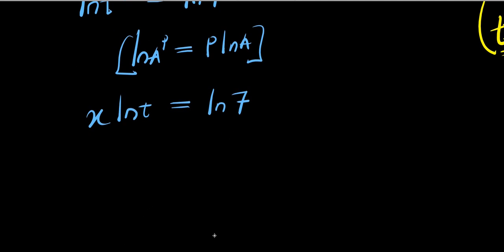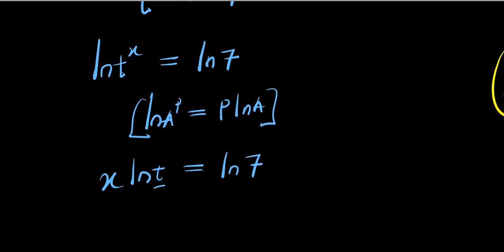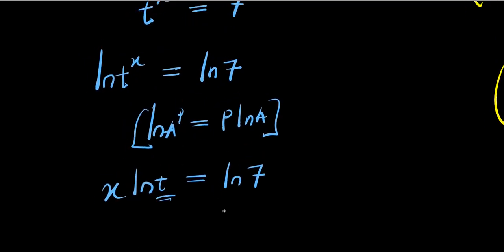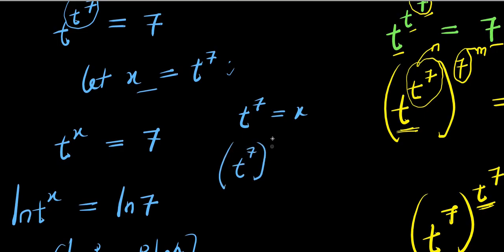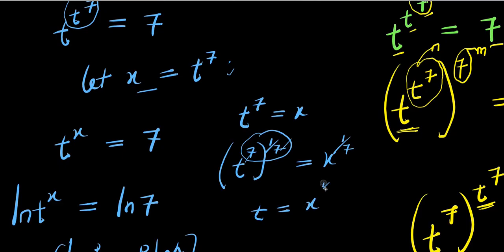Now I can express this in terms of x. Going back to x equals t^7, I need to isolate t. Raising both sides to the power of one over seven gives t equals x to the power of one over seven.